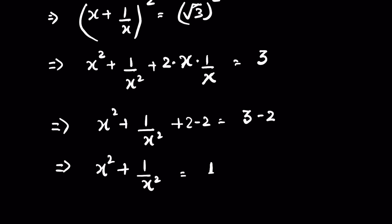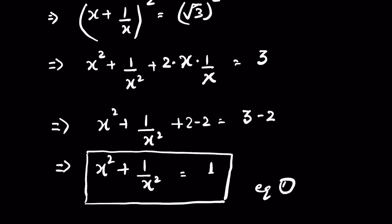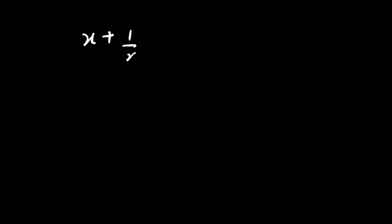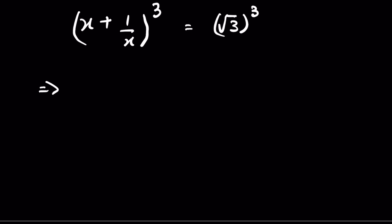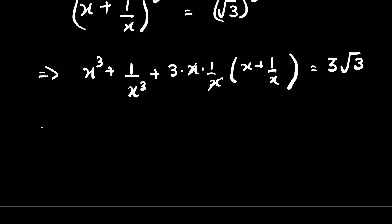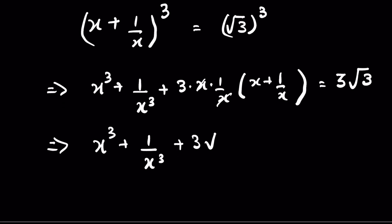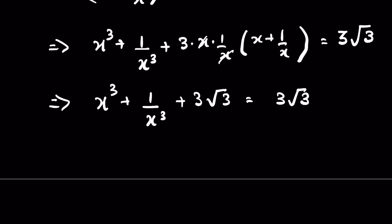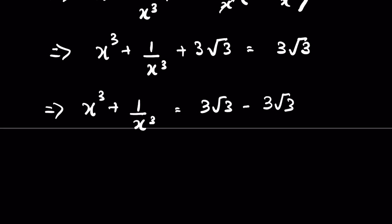The second step is to cube both sides: (x + 1/x)³ = (√3)³. Using the formula (a + b)³ = a³ + b³ + 3ab(a + b), this equals 3√3. The x terms cancel, giving x³ + 1/x³ + 3 times (x + 1/x) = 3√3. Since x + 1/x = √3, we have 3√3 on both sides. Subtracting 3√3 from both sides gives x³ + 1/x³ = 0.